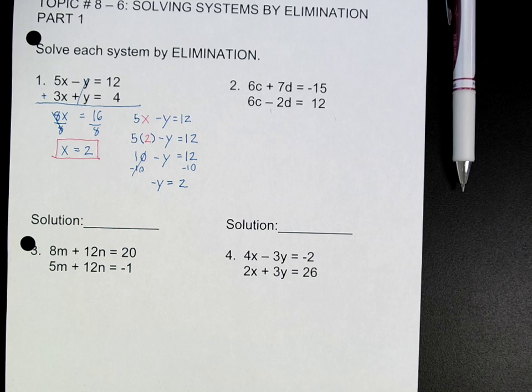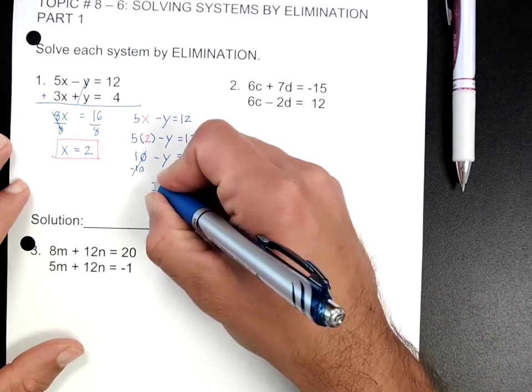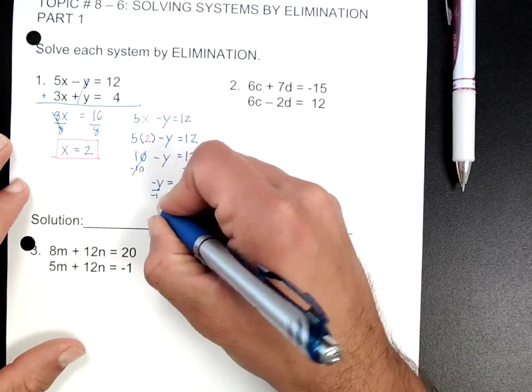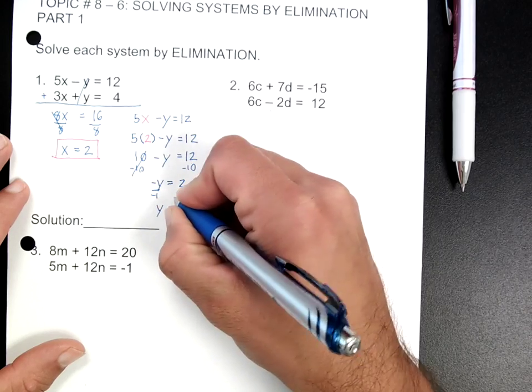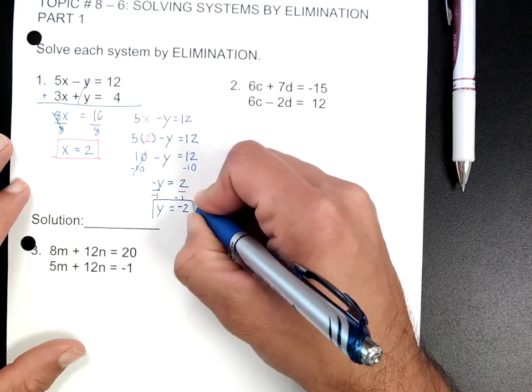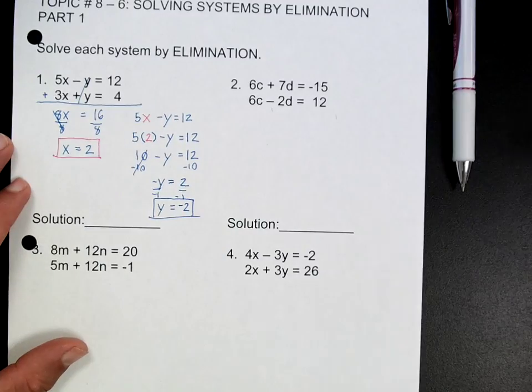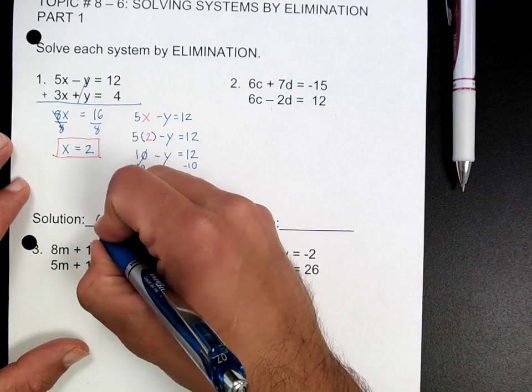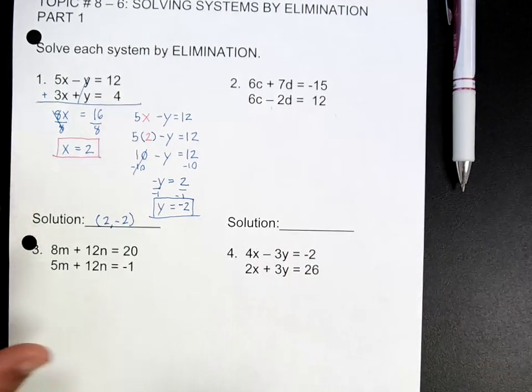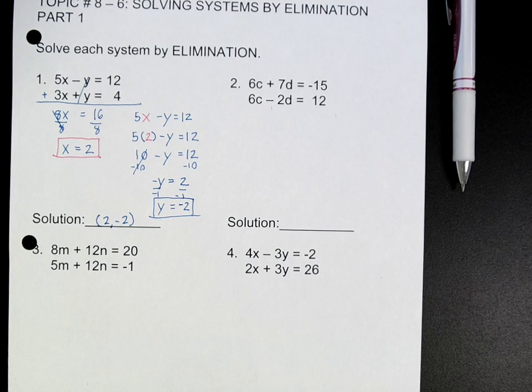The last step would be to divide by negative one on each side, so I get y equals negative 2. My answer is, remember, write it as a coordinate point: 2 comma negative 2. That's my answer.